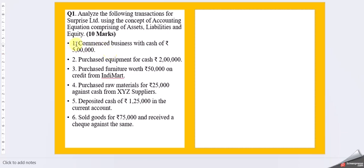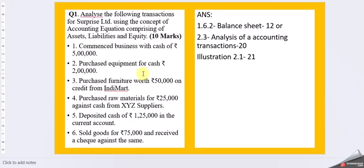The first one is commenced business with cash of 5 lakhs, purchased equipment for cash of 2 lakhs, purchased furniture worth 50,000 on credit from India Mart, purchased raw material for 25,000 against cash from XYZ supplier, deposited cash of 1,25,000 in current account, sold goods for 75,000 and received a check against the same. So this is your question. Now let us move on.